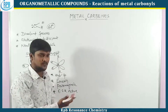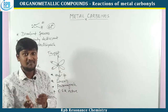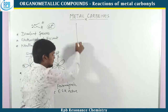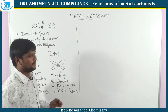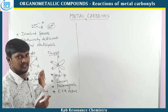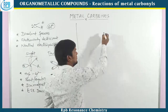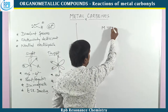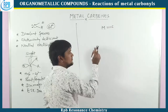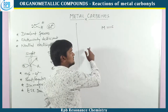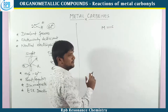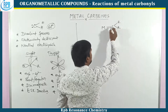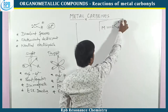Now let's move on to metal carbene chemistry. Remember: carbene is a divalent species connected to the metal. Simply it is called metal carbene — the two electrons associated with the metal in the form of a double bond. This is the metal carbene chemistry.